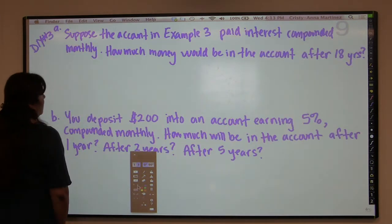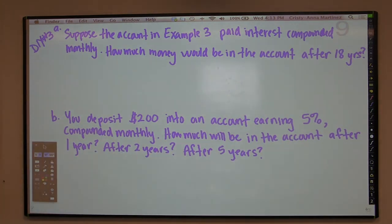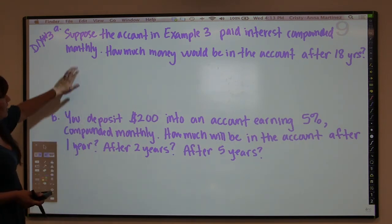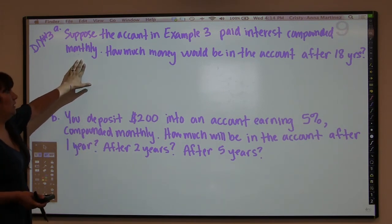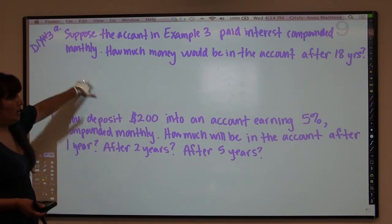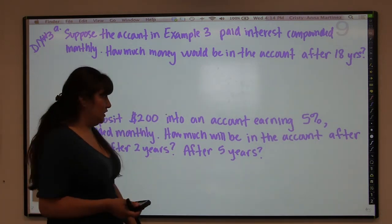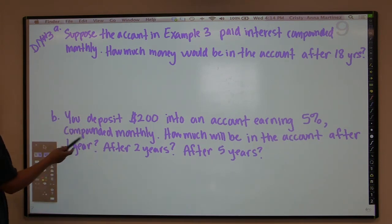Now try this one. Using the previous example but compounded monthly — that's 12 times a year — divide the interest rate by 12 and multiply the 18 years by 12. There's also another example with $200 in the bank for you to work on.